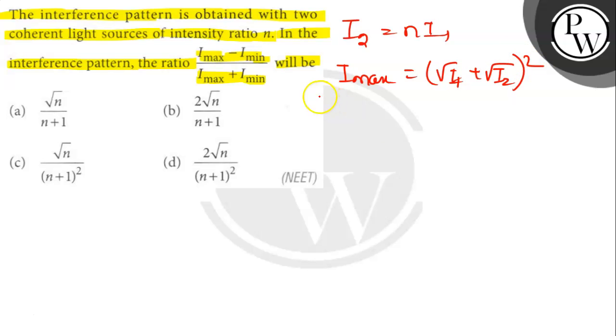so I_max is (√I₁ + √(nI₁))² which equals (1 + √n)². So it will be (1 + n + 2√n)I₁.